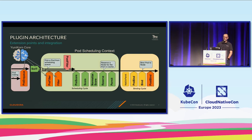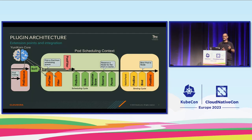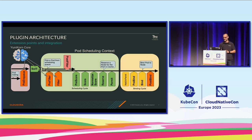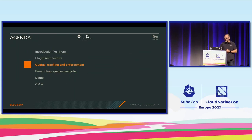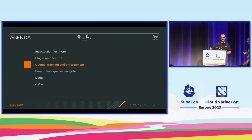The input from the core scheduling cycle feeds into the first three plugins. We decide what goes through, decide which node to place a pod on, and for that we interact with the three plugins: pre-enqueue, pre-filter, and filter. With all of this, we handle quotas and all the other features Peter will go into further.